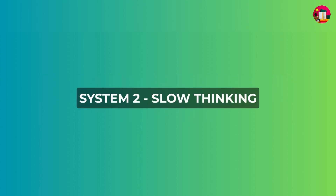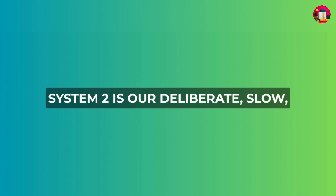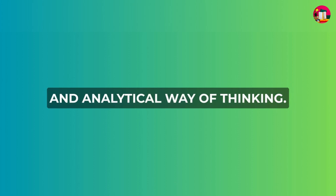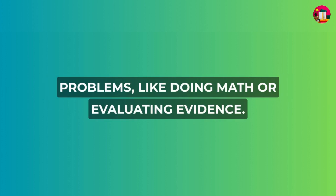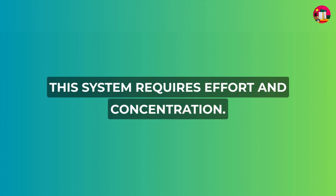System Two: slow thinking. System Two is our deliberate, slow, and analytical way of thinking. It kicks in when we need to solve complex problems, like doing math or evaluating evidence. This system requires effort and concentration.